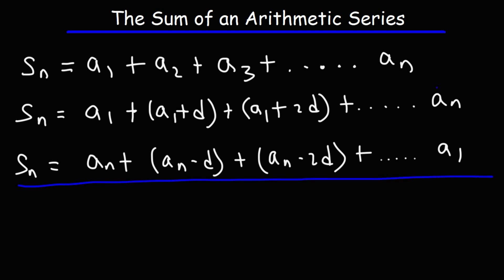Now we're going to add these two equations. So let's put a plus sign. S sub n plus S sub n, that's going to be 2 times S sub n. Here we have a sub 1 plus a sub n. I'm going to put it in parentheses. Then if we add these two, notice that d cancels with negative d, and we get a sub 1 plus a sub n.